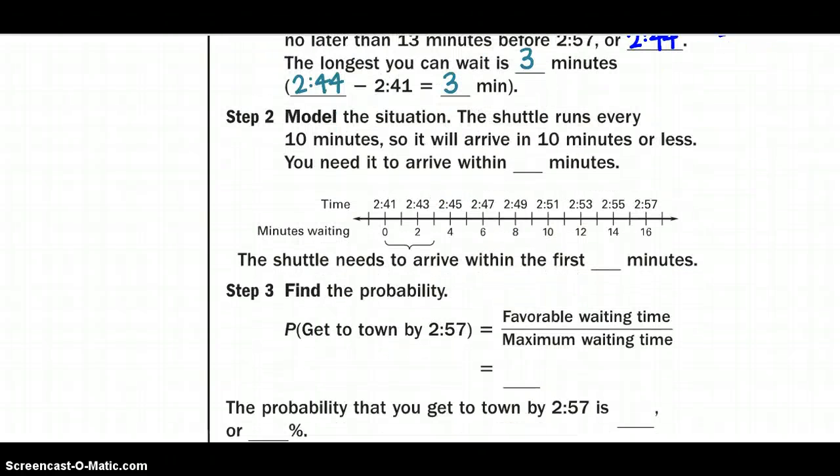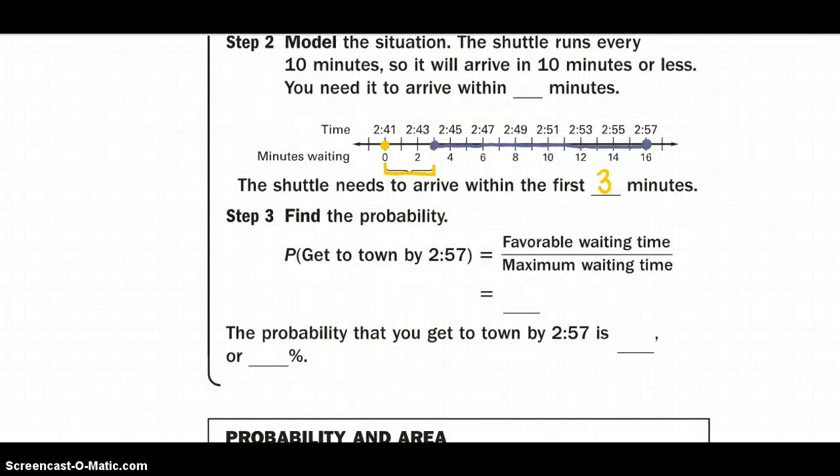Alright so let's put that into a model. So we need to make sure we get down there at 2:57. And we know it takes us 13 minutes to get down there. We know that. And we got there at 2:41 so that gap time is the only time we can wait. And it might show up in 10 minutes so we might not even make it down there. But we know that we can only wait three minutes for it to arrive to get down there. So what's that probability that we might make it down there in time?